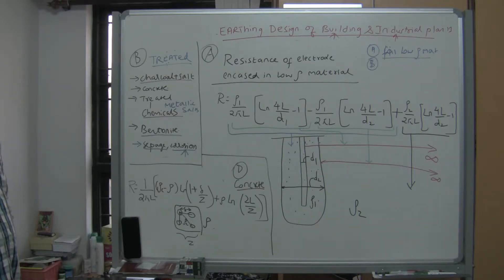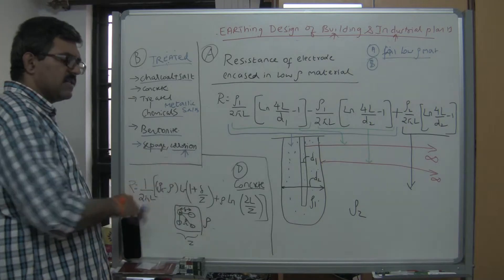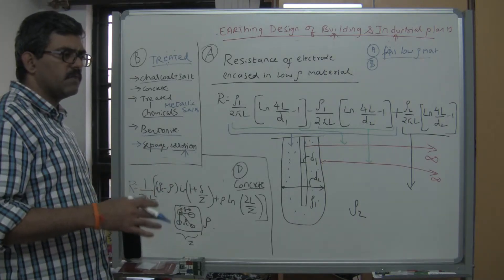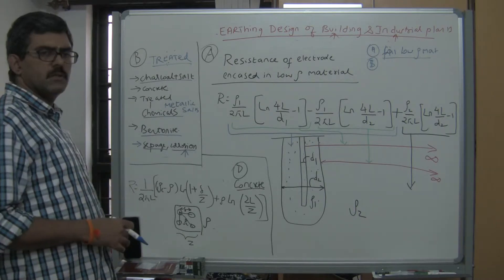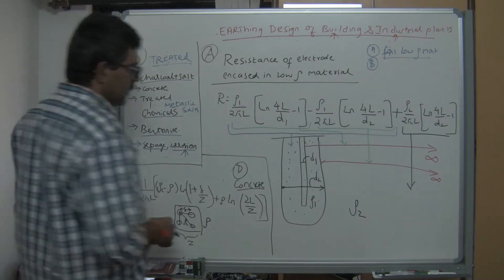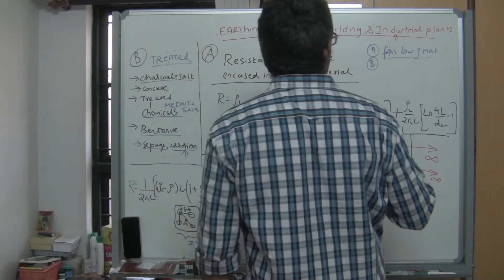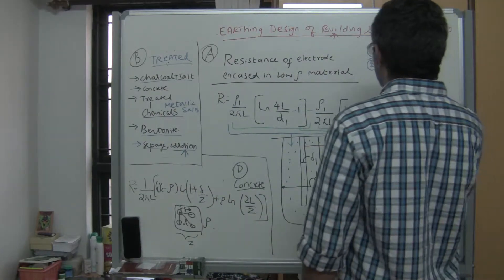If they don't allow it, you cannot do this. But if the resistivity of the soil is very high, then maybe this is one of the options. Another option is auxiliary earth grid.